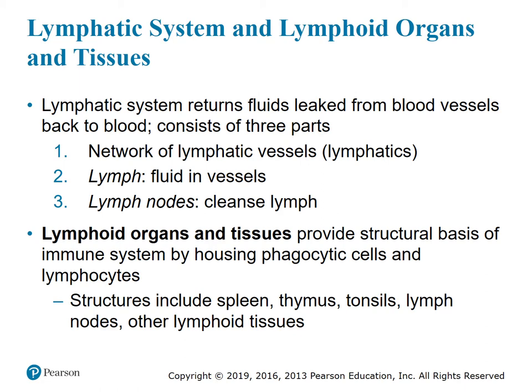Lymphoid organs and tissues provide the structural basis of the immune system by housing the phagocytic cells and the lymphocytes. Structures include the spleen, thymus, tonsils, lymph nodes, and other lymphoid tissues.